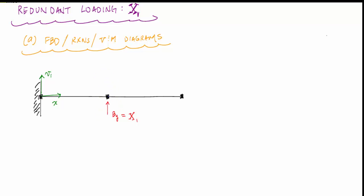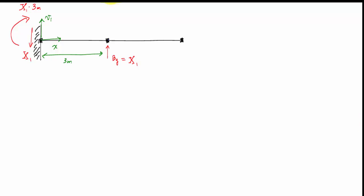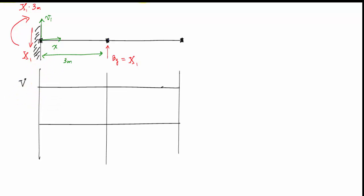Here's my structure with the redundant load X₁ applied. Solving for reactions gives a vertical reaction pointing downward of X₁ and a moment reaction of X₁ times three meters. Now I'll draw the shear and moment diagrams. Starting the shear diagram: I go down by X₁ (negative X₁), the loading is zero so it stays constant, then jumps back to zero.